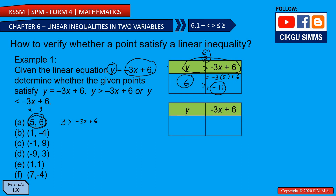For point (1, -4): substitute y with -4 and x with 1. So -3(1) + 6 = -3 + 6 = 3. Therefore -4 is smaller than 3, meaning y is smaller than -3x + 6. This point satisfies that linear inequality.